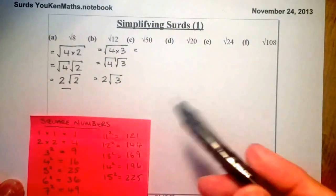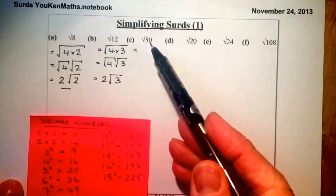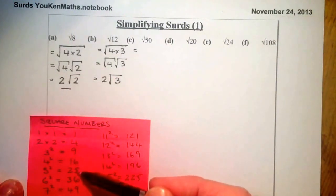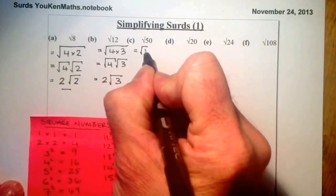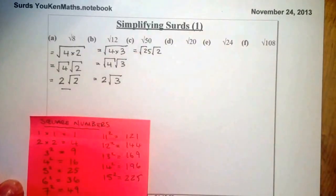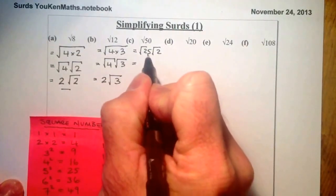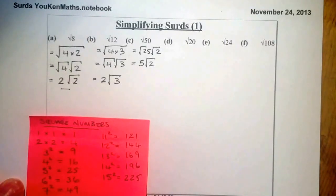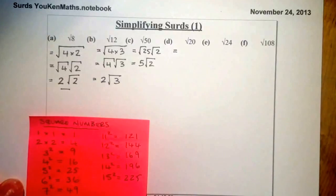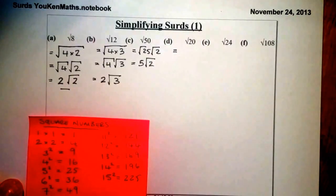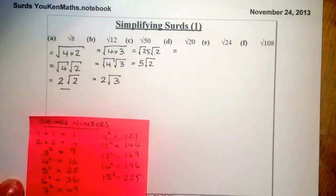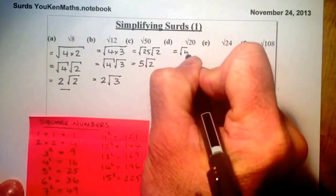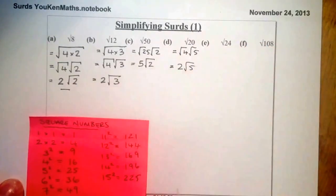Simplifying root 50: I'm thinking of a number that multiplies to give 50, one being a square number. Half of 50 is 25, and 25 is in my square numbers list. So I use 25 times 2, giving root 25 times root 2. The square root of 25 is 5, so the answer is 5 root 2. You can pause the video and try the next one. Root 20: the square number I can see is 4, so that's root 4 times root 5, giving 2 root 5.